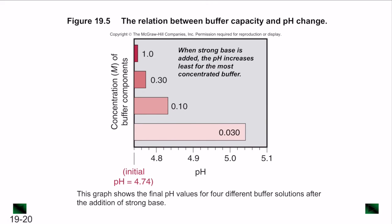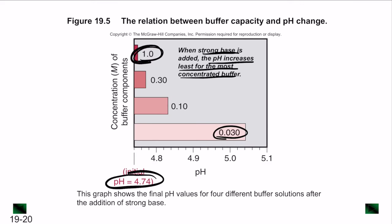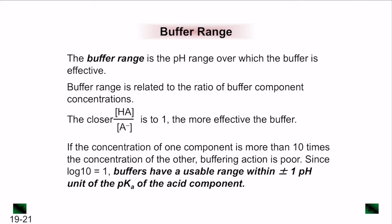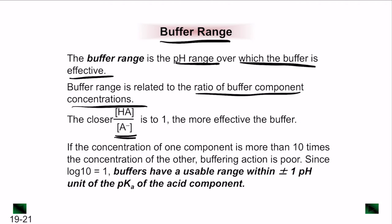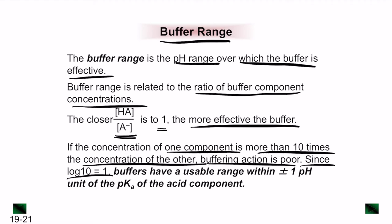For example, when a strong base is added, the pH increases least for the most concentrated buffer. The more dilute the buffer, the more the pH changes. Buffer range is the pH range over which a buffer is effective, and it is related to the ratio of buffer concentrations. The closer this ratio (acid/base) is to 1, the more effective the buffer. Buffers have a usable range of ±1 pH unit of the pKa of the acid component. If one component concentration is more than 10 times the other, buffering action will be poor.